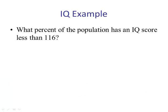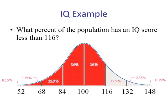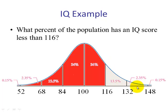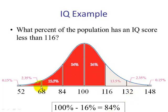What percent of the population has an IQ score less than 116? Drawing the picture, we know the right tail above 116 was 16%. The shaded region plus the unshaded region equals 100%. So we take 100% minus 16%, and the percent of IQ scores less than 116 is 84%.